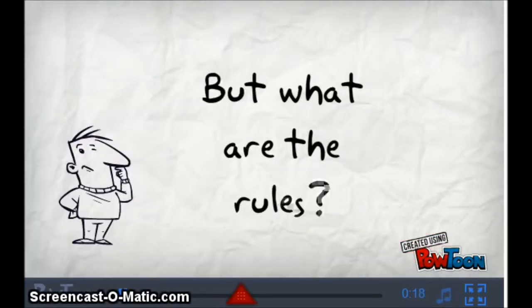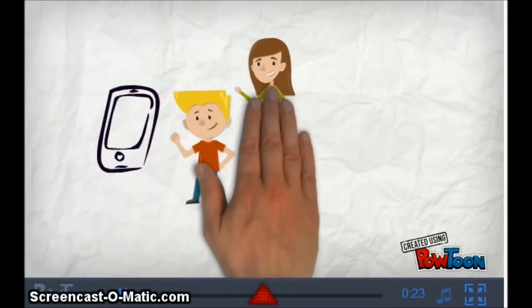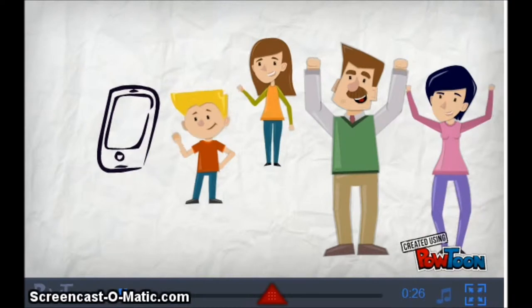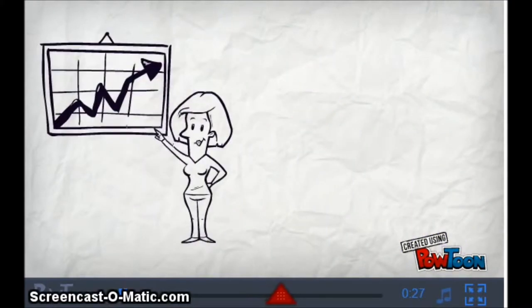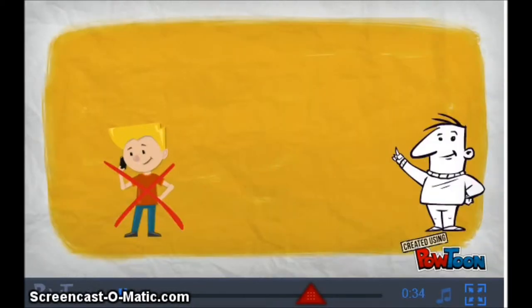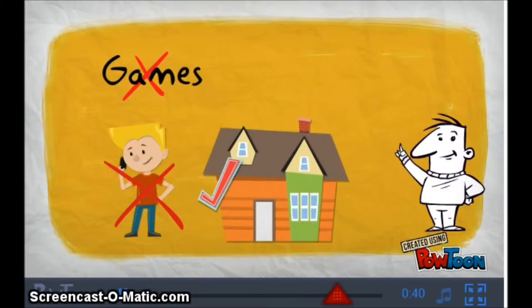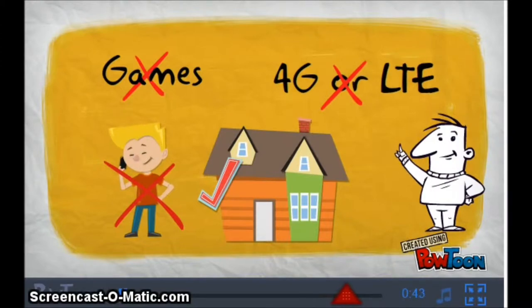A device at school? That's great, but what are the rules? The first thing to remember is that your device is your responsibility. Make sure that your parents approve. When you bring your device to school, your teacher is in charge of whether you use it. It must be silent. You can't photograph or video record without permission, and it can't be used to cheat on tests. Only teacher-approved games are allowed. Charge it at home and only use the school's internet — no 3G, 4G, or LTE.